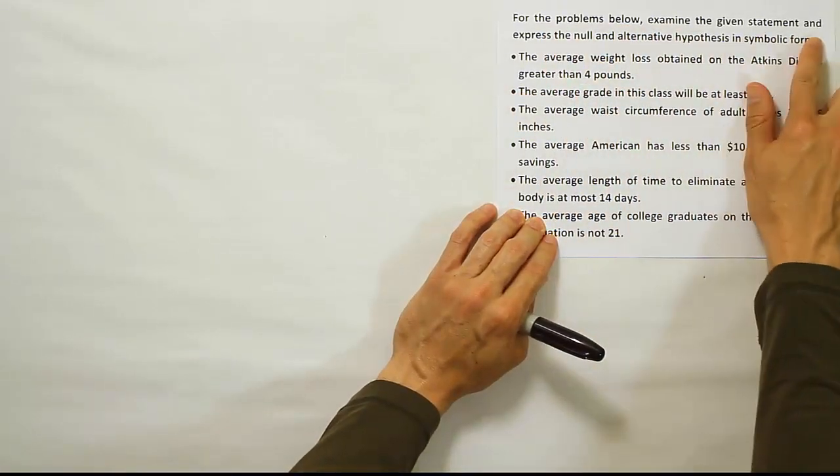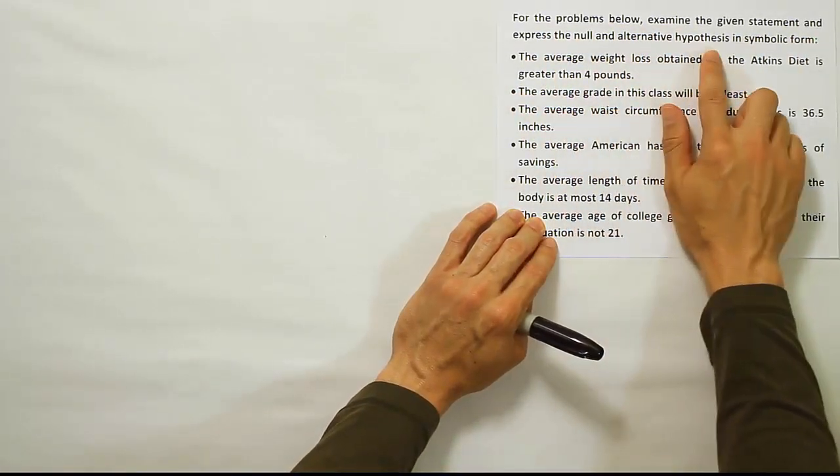For the problems below, examine the given statement and express the null and alternative hypothesis in symbolic form.